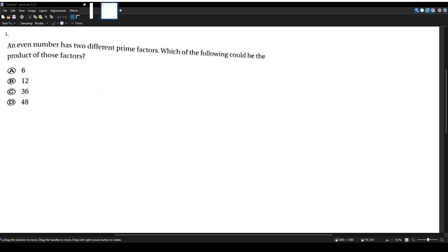Okay, so we have a second test here for the MATH CST portion of the multi-subject exam. Question one, an even number has two different prime factors. Which of the following could be the product of those factors?